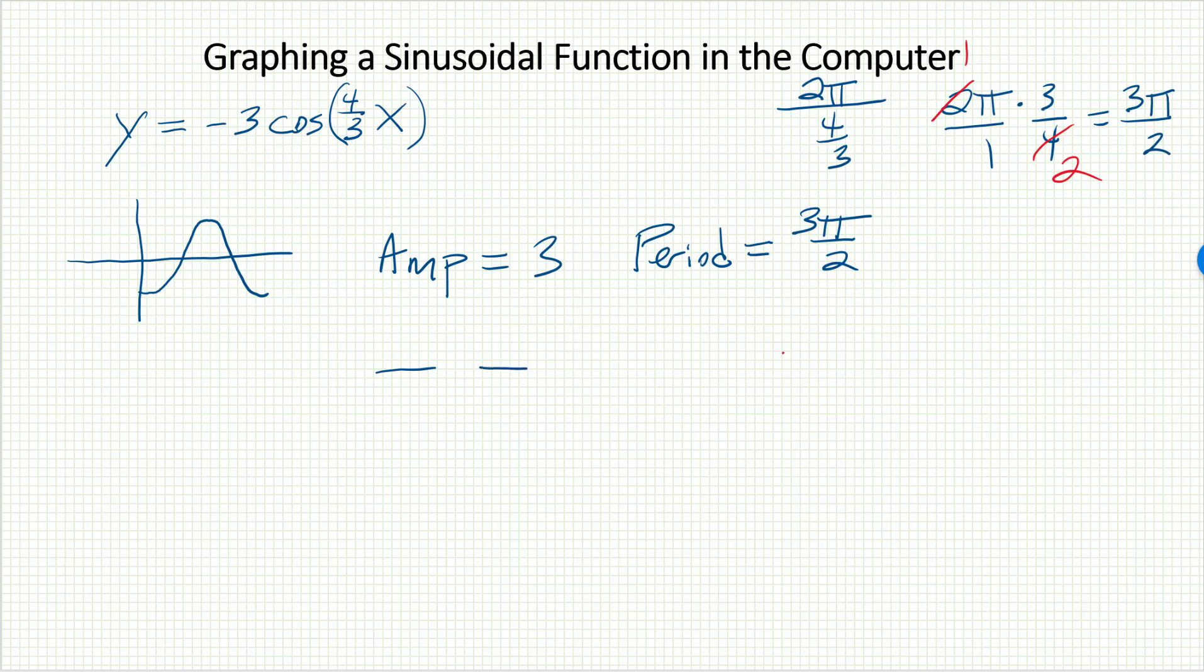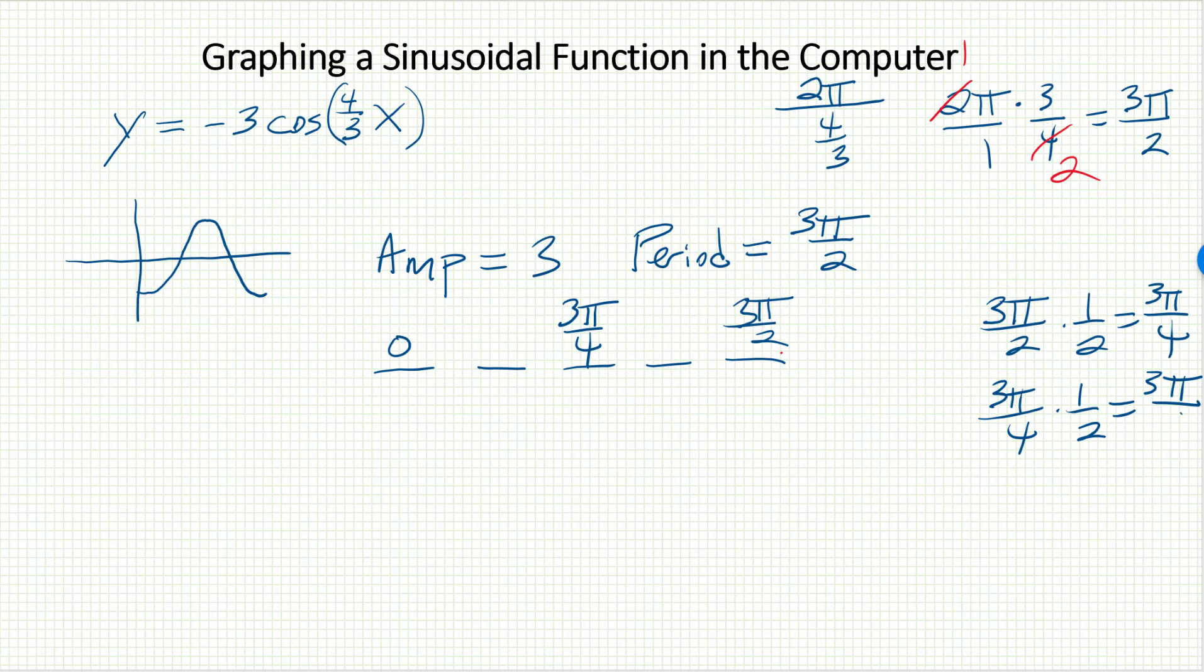How about the x values of my 5 key points? I always start at 0. I always end at the period. Half of 3 pi over 2 would be 3 pi over 4, so I know that goes here. Half of 3 pi over 4 would be 3 pi over 8, so I know I'm counting by 3 pi over 8. 3 pi over 8, 6 pi over 8, 9 pi over 8, and then 12 pi over 8, which reduces to 3 pi over 2.